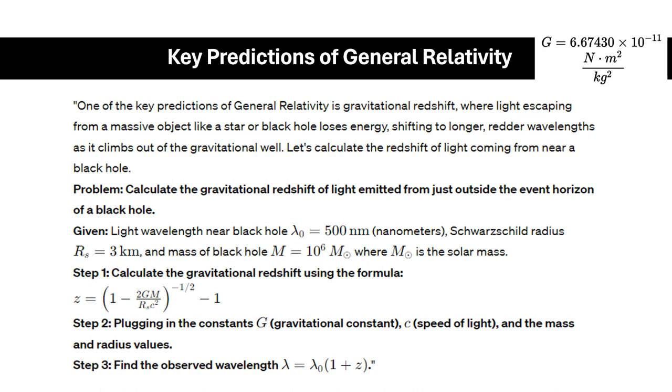The problem reads: Calculate the gravitational redshift of light emitted from just outside the event horizon of a black hole. Given: the light wavelength near the black hole λ₀ = 500 nanometers, the Schwarzschild radius Rs ≈ 3 km, and the mass of the black hole M = 10⁶ M☉, where M☉ is the solar mass.